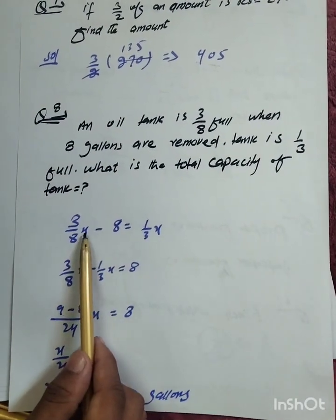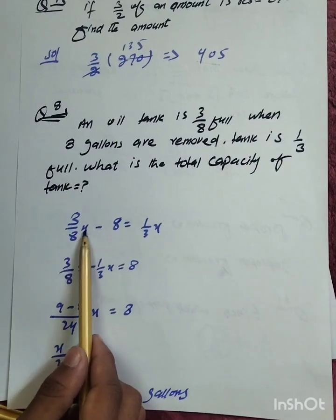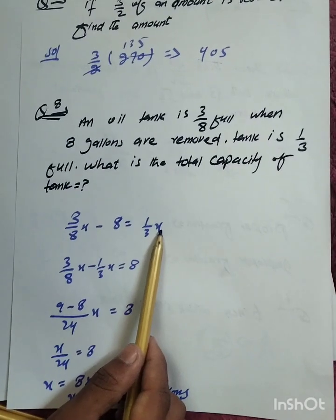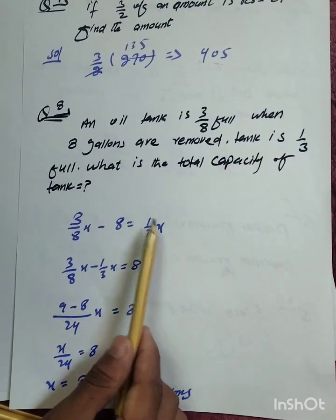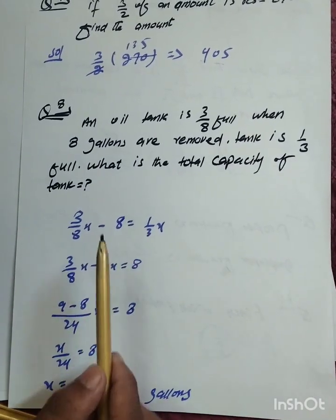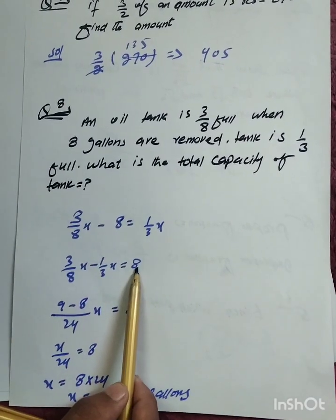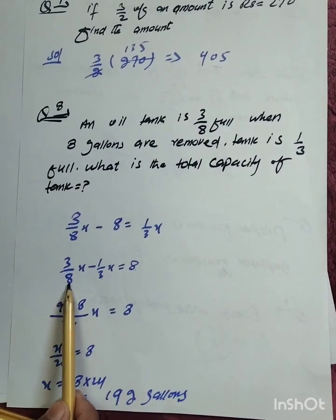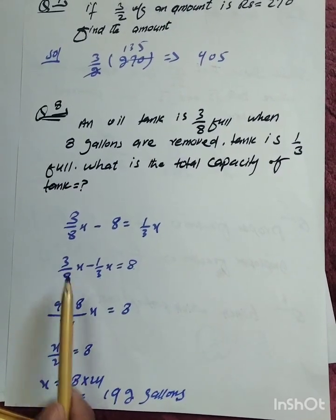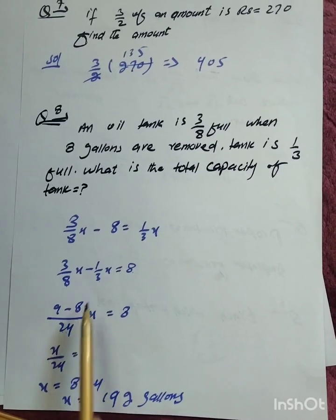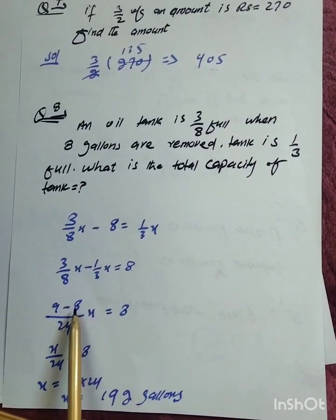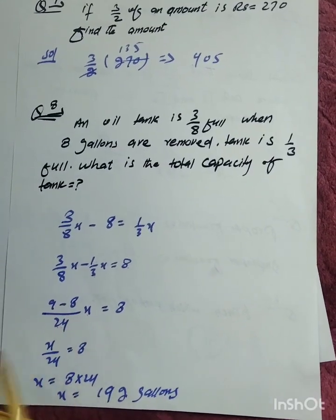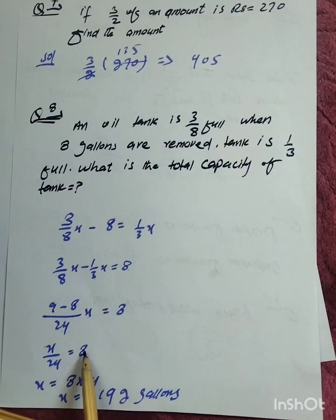Solving the equation: 3/8x minus 8 equals 1/3x. Rearranging: 3/8x minus 1/3x equals 8. Finding common denominator 24: 9/24 minus 8/24 equals 1/24. So 1/24x equals 8.